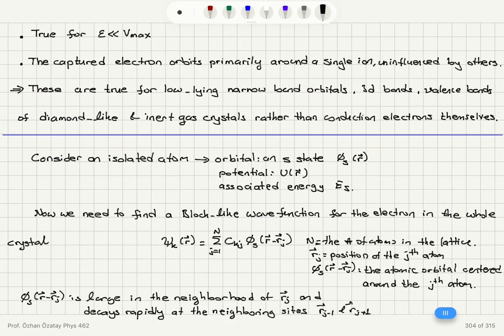And these are true for low-lying narrow band orbitals like 3D bands, valence bands of diamond-like and inert gas crystals rather than conduction electrons themselves. So this is really good for low-lying narrow band orbitals.